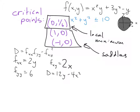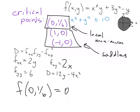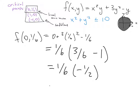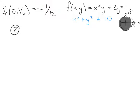To compare later with the boundary values, we compute f at the local minimum. f(0, 1/6) = 0 + 3·(1/6)² − 1/6. Factoring out 1/6: this is (1/6)(3/6 − 1) = (1/6)(−1/2) = −1/12.